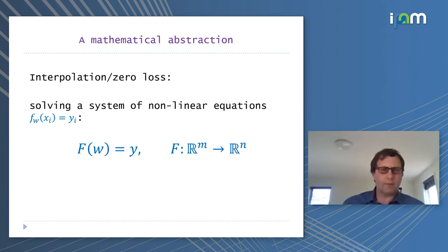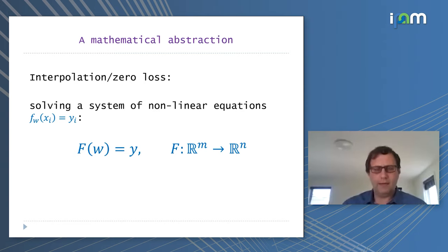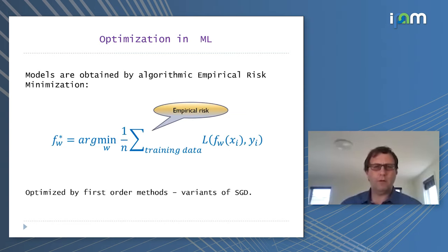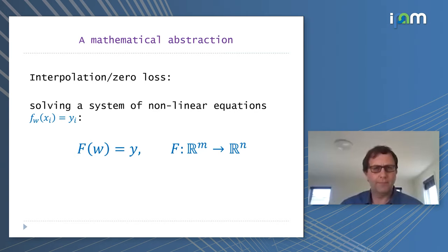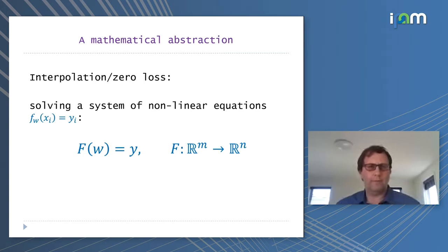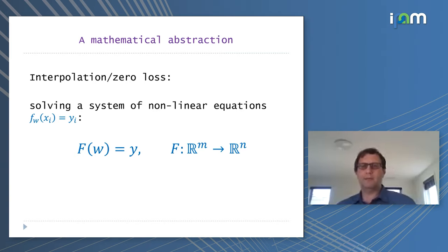From a mathematical abstraction point of view, if we follow Ruslan's advice of training to have zero loss, this is essentially the same as solving a system of non-linear equations. We simply want to produce output Y — so F(W)(X) = Y. This is what we call interpolation, because we would like the network to fit the training data exactly.